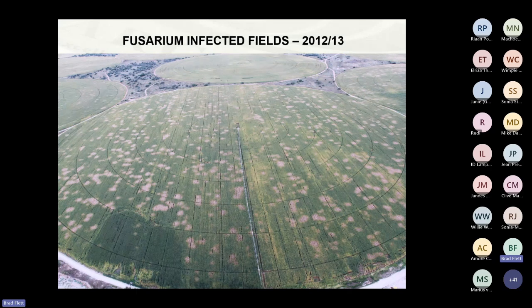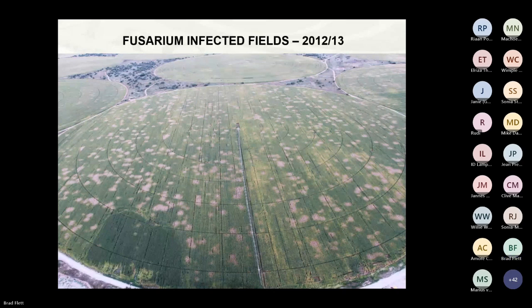Just to give you an idea, this is a Fusarium-infected field — maize going under pivots. You can see all the dots of dead areas where the maize have died due to Fusarium stalk rots. If you had to add up all those dots, it's quite a big area of infection.